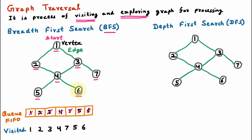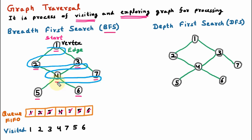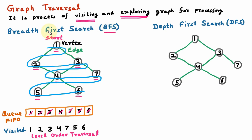We can see that breadth first search goes level by level: starting from vertex 1, then going to the next level which is vertices 2 and 3, then going to the next level which is 4 and 7, and then again going to the next level which is 5 and 6. So it goes level by level, and that is why breadth first search is also called level order traversal. That is the first type of graph traversal — breadth first search or BFS.